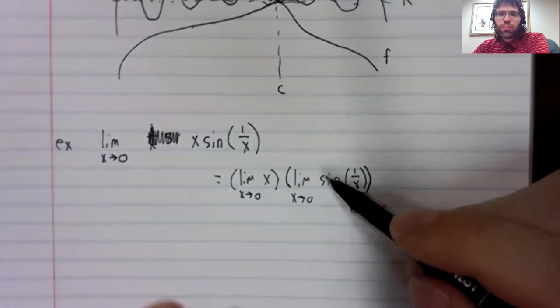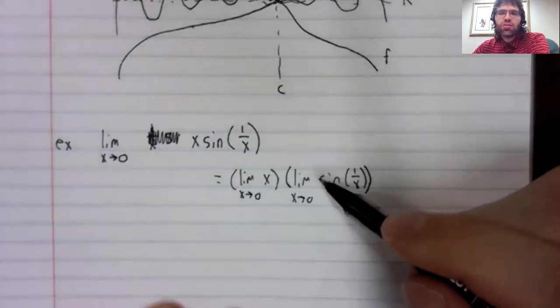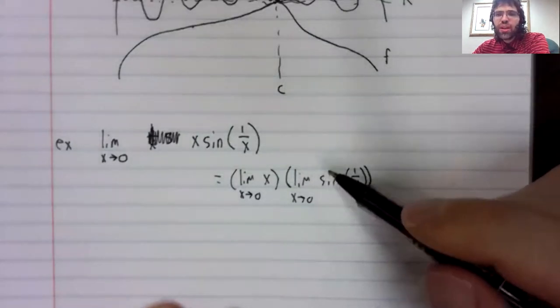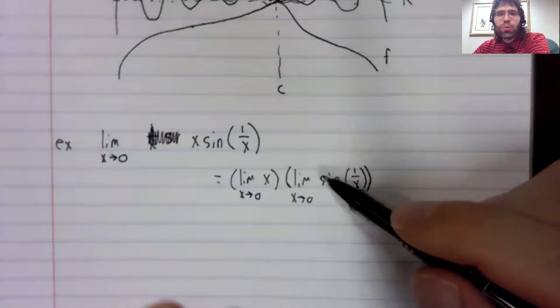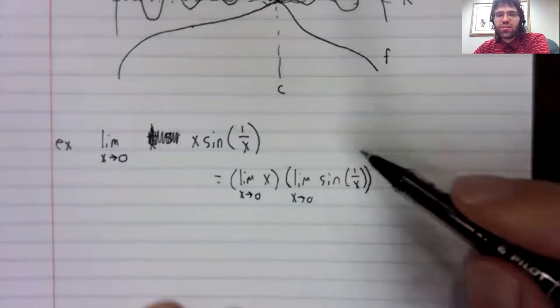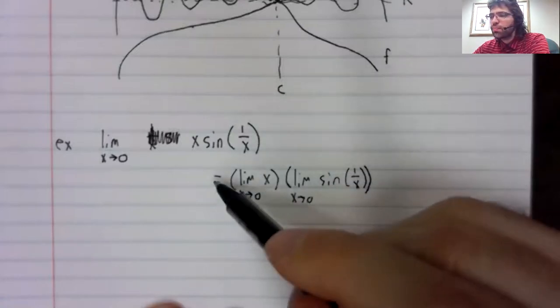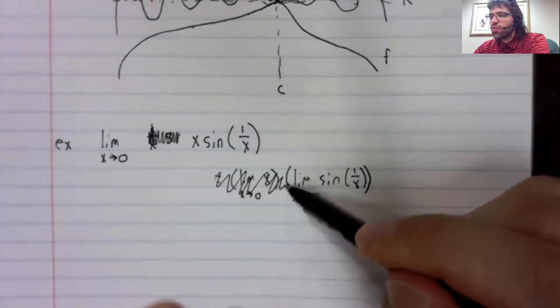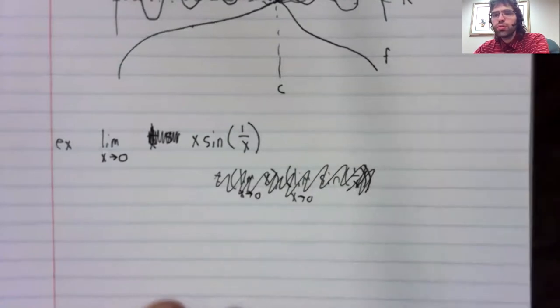And the reason it doesn't work is that this limit doesn't exist. This was one of the examples we gave when we were talking about limits not existing.